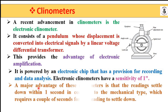A major advantage of these electronic clinometers is that the readings settle down within one second, in contrast to the mechanical types, which require a couple of seconds for readings to settle down — thus reducing the measurement time.